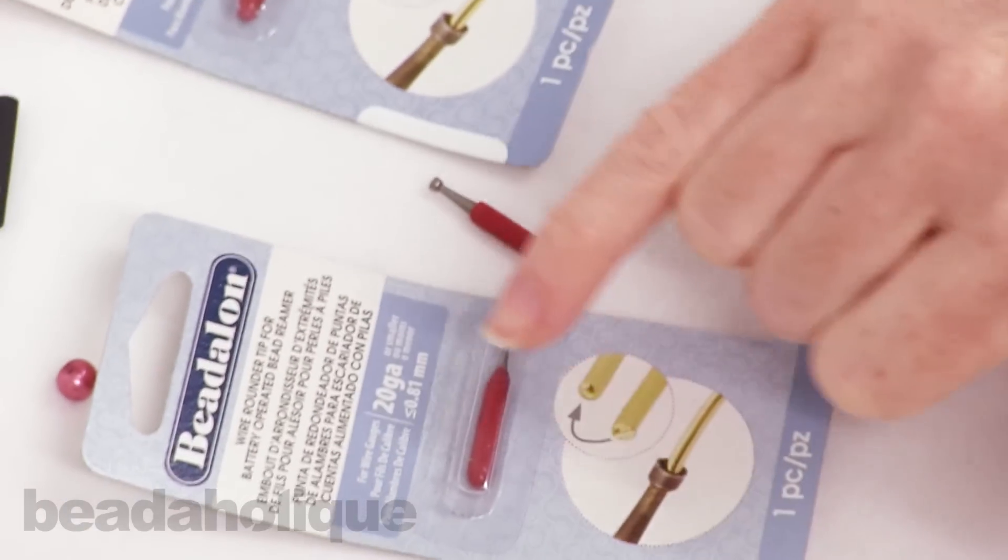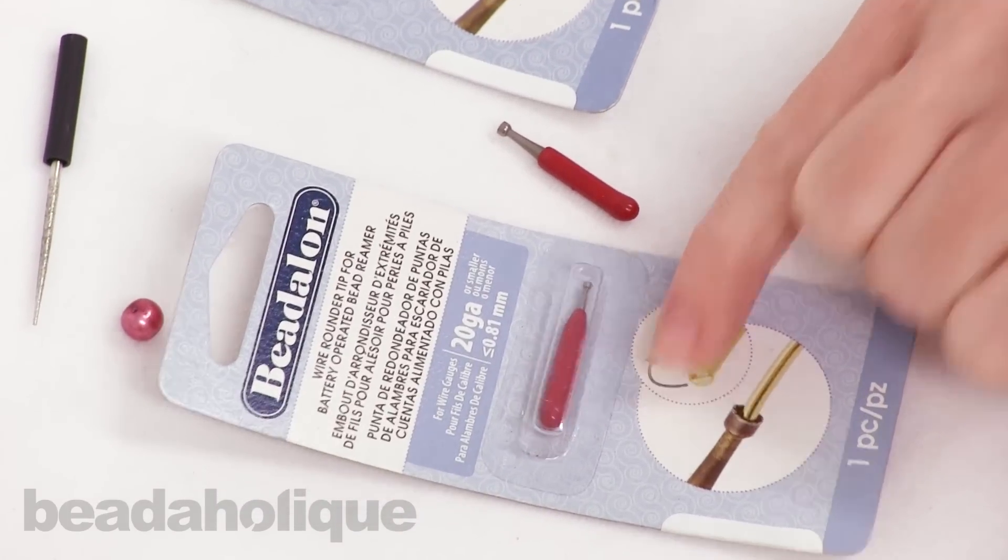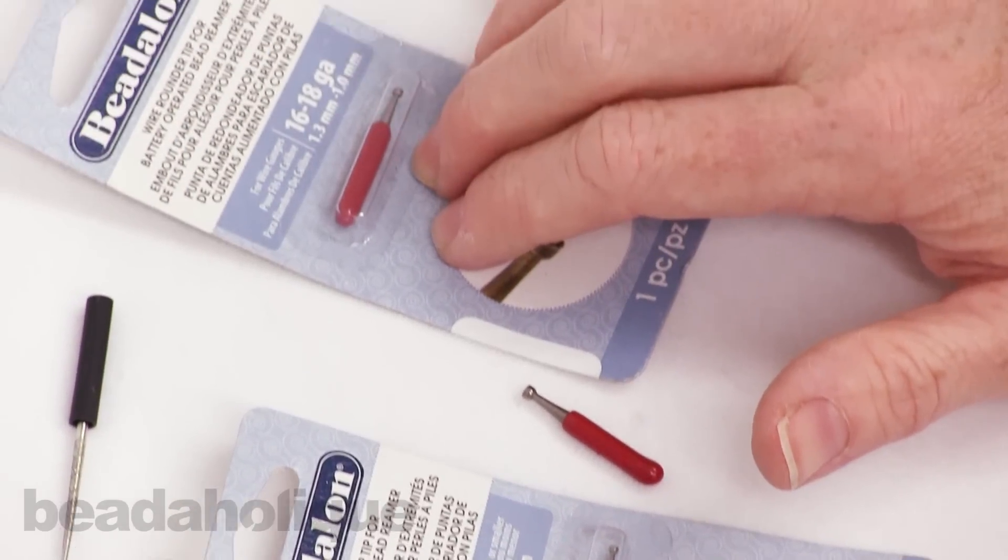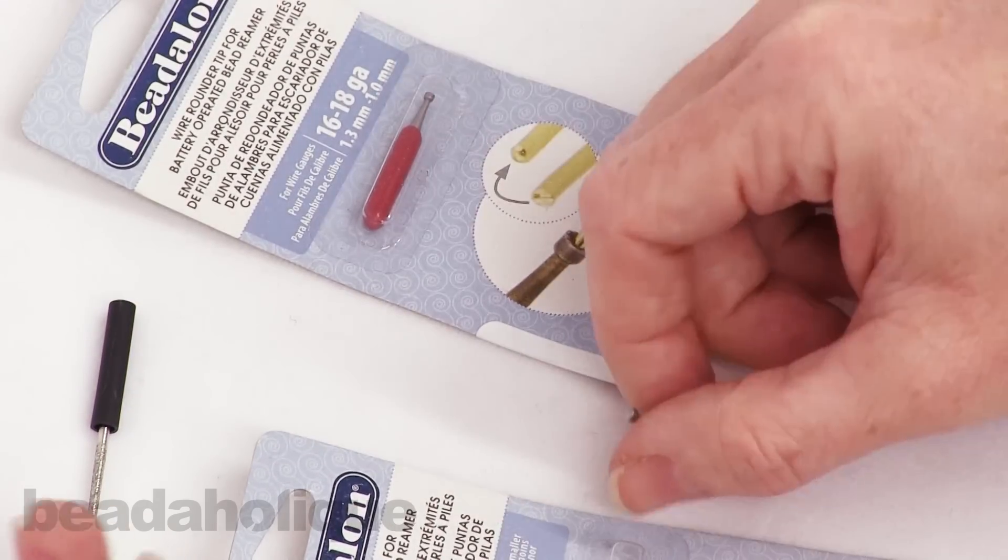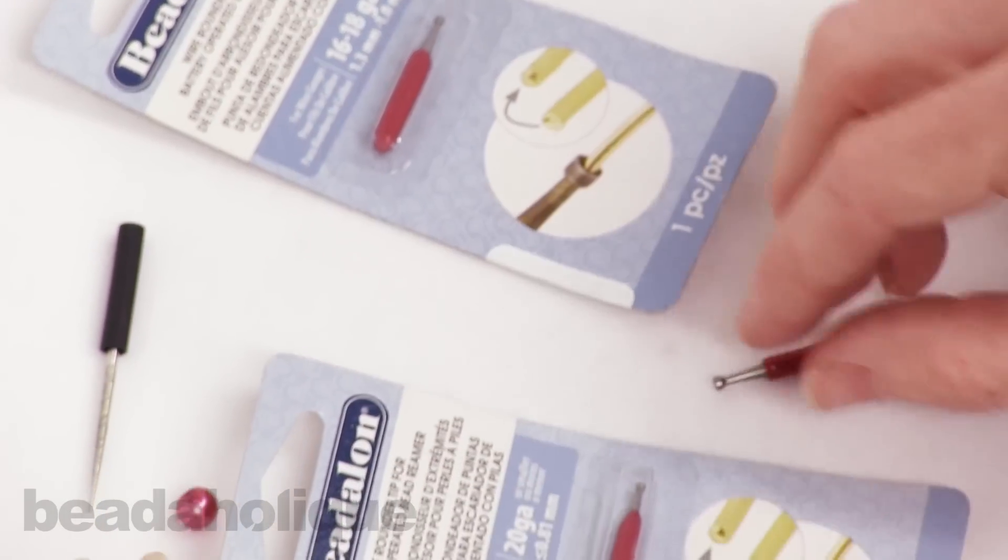There's different size tips. So here this one is for 20 gauge wire. This is for 16 to 18 gauge and the one here is for 12 to 14 gauge. So I'm going to be using 12 gauge wire. So I'm going to be using this one right here.